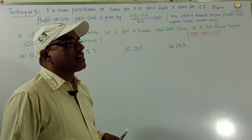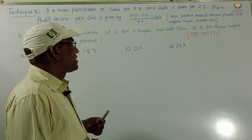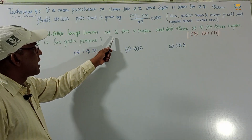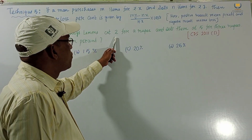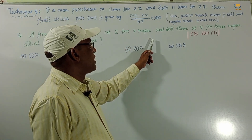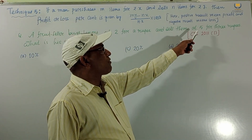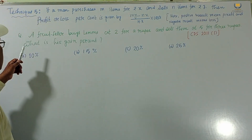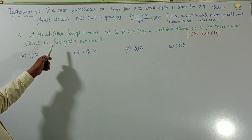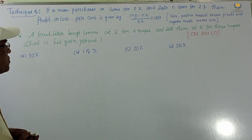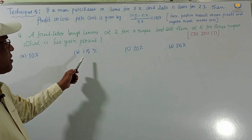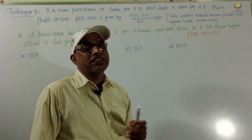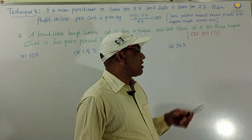Now consider Problem 1: A fruit seller buys lemons at 2 for a rupee and sells them at 5 for three rupees. What is his gain percent? The options given are 10 percent, 15 percent, 20 percent, and 25 percent. This problem was asked in CDS 2011.